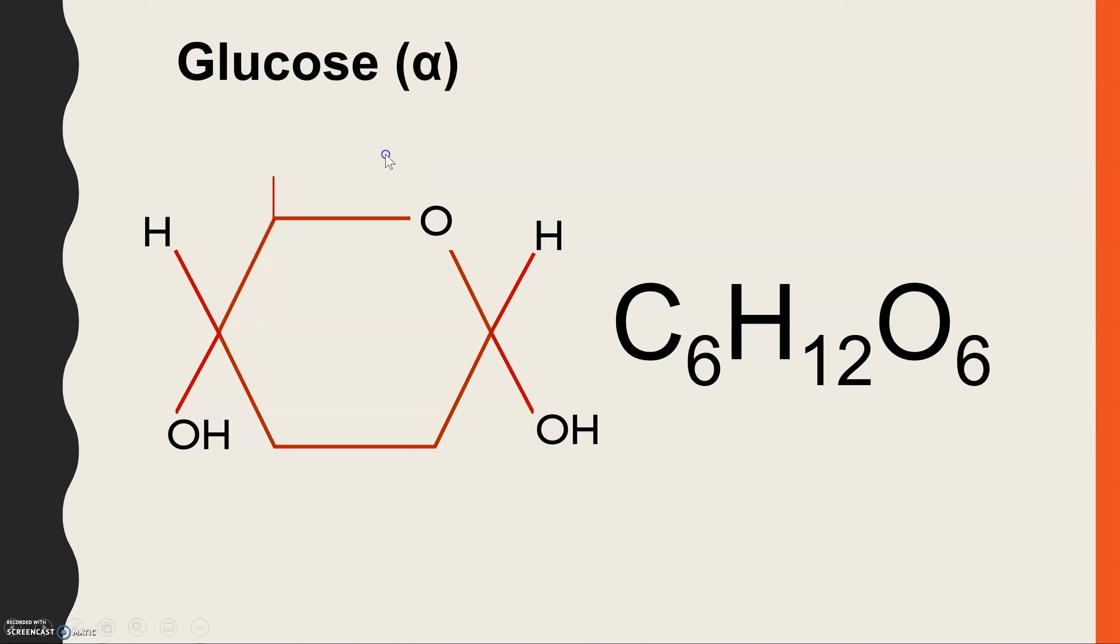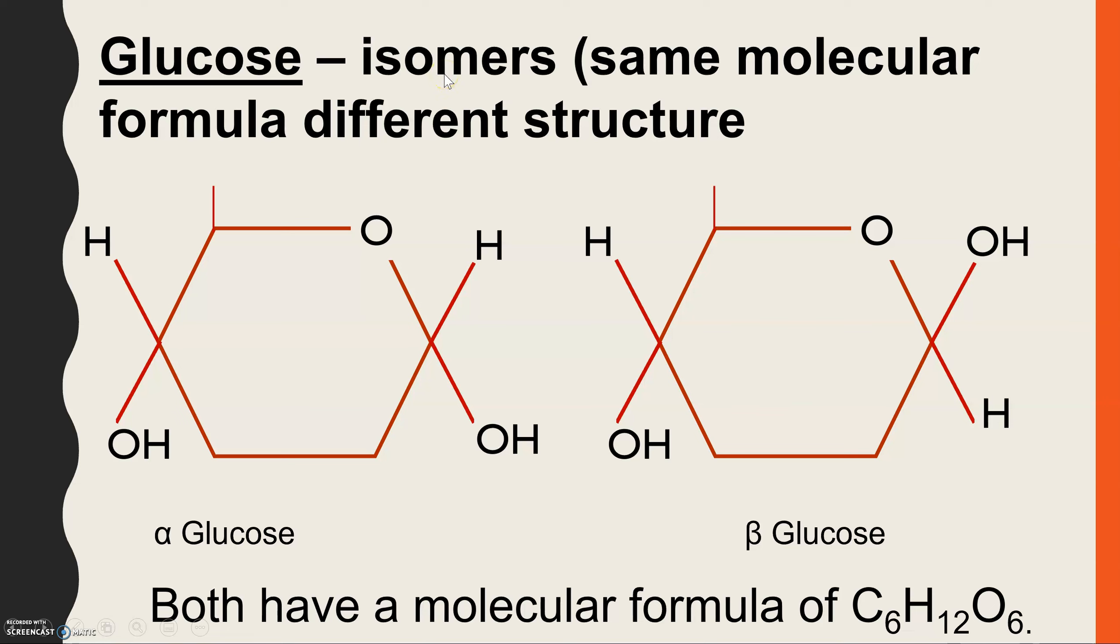And what an isomer is, is when you have two molecules, or it could be more, which have the same molecular formula. So in this case, we have glucose, two versions, C6H12O6, so same molecular formula, but their structure is different. So that's what we mean by an isomer. And for alpha and beta glucose, the key difference is on carbon one. Alpha glucose is the one we just looked at with hydrogen on top, hydroxyl on the bottom.